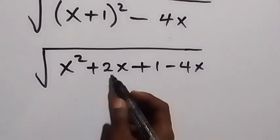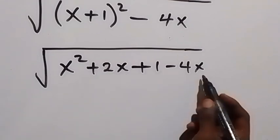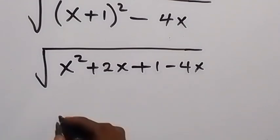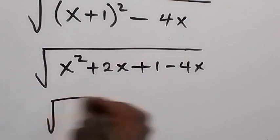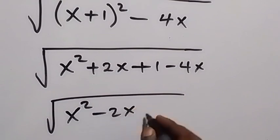Then when we collect the like terms together, bringing x together here, so we have plus 2x minus 4x, and that will give us minus 2x. So we have square root of x squared minus 2x plus 1.